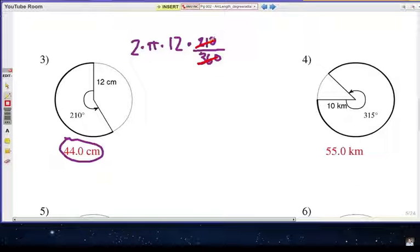Let's do some simplifying and divide out some common factors. I can divide out a 30 factor for both of these, which will leave me a 7 and a 12. Notice that that 12 can cancel with that 12. And so really what I have is 2 times 3.14 times 7, and that should give me 44.0 round to the nearest tenth.